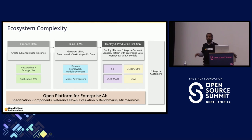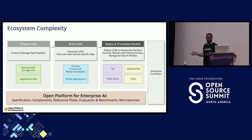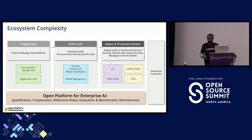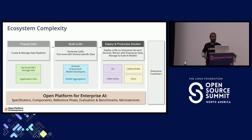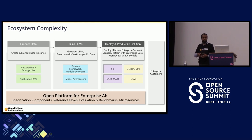Once you have the data and you're in development mode, you need to start building LLMs. You use this data, either with an open-source model or by fine-tuning one to create your own version. You may also want to use multiple models, so model aggregators like Hugging Face and Mistral come into play.